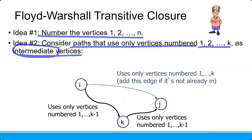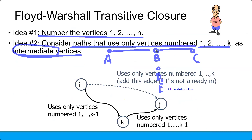Alternatively, we can use dynamic programming. The idea is: we need to check the number of vertices 1 until N, and then consider paths that use only vertices numbered 1 until K as the intermediate vertices. For example, if I want to go from A to C, I can visit via B, via D, or via E — these are the intermediate vertices.